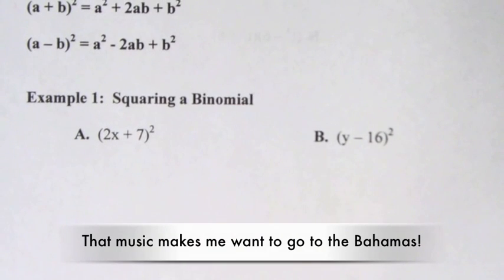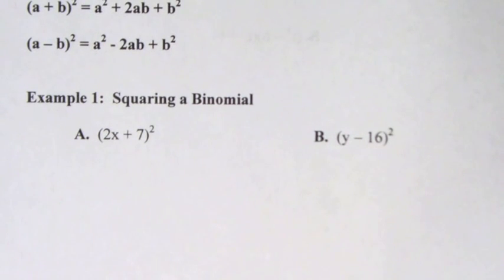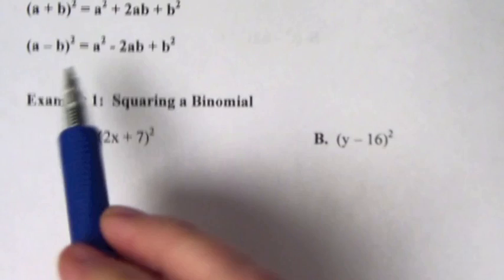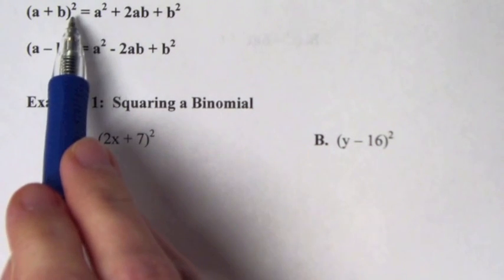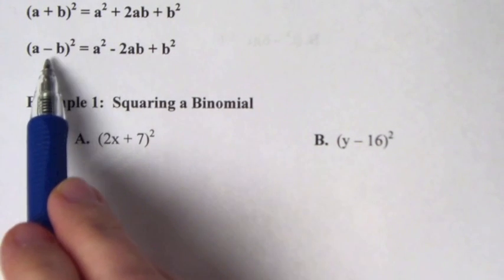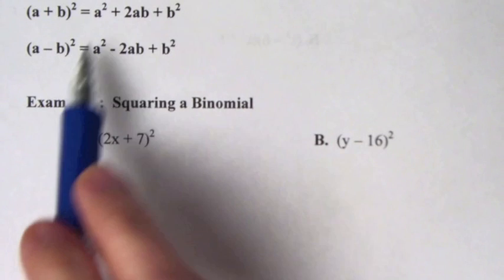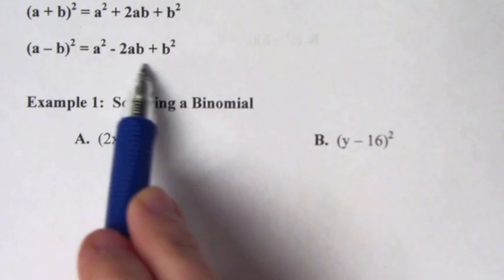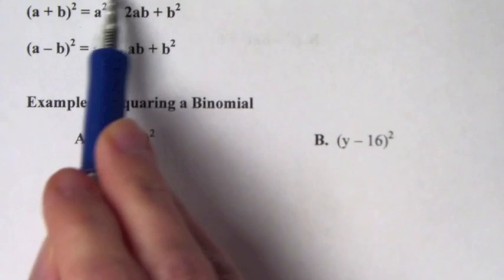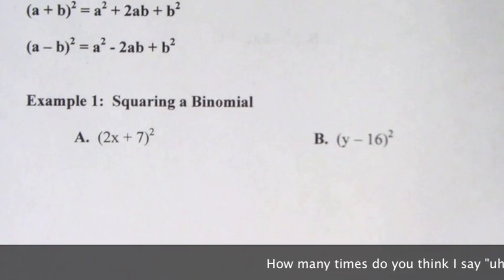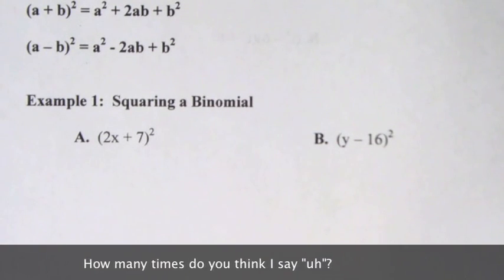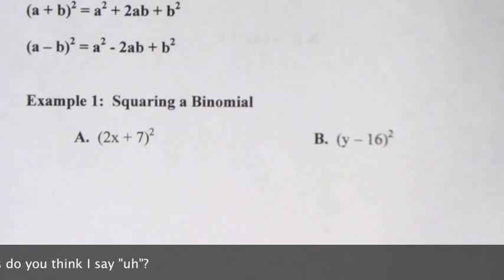Today we're going to talk about what we do when we square a binomial. There are two situations: one where it's (a + b) squared and another where it's (a - b) squared. These formulas will help you multiply or square the binomial.